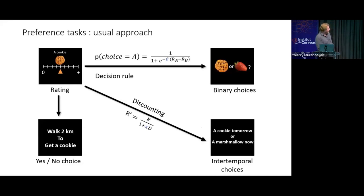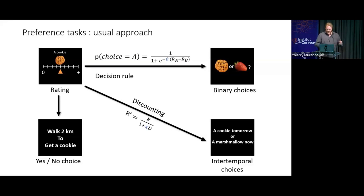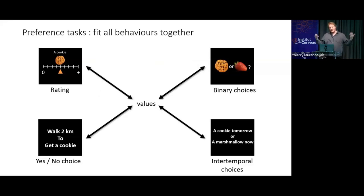The usual way to analyze this is to use the ratings to predict the choices — you plug the ratings into a sigmoid equation and see to what extent you're able to predict the choices with the ratings. What you're testing is whether the choices are consistent with the ratings. But when you actually do the task, you're not thinking about ratings you gave five minutes ago — you rely on internal hidden values, and you use these values to perform all the tasks: ratings, choices, compromises, etc.